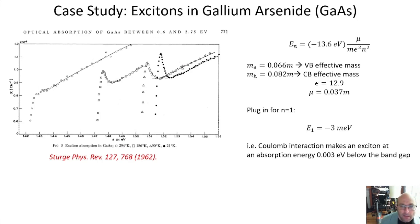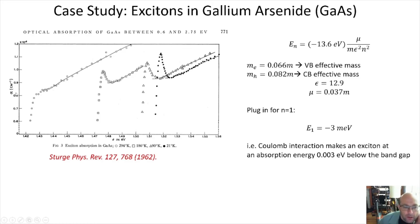Let's do a case study: gallium arsenide. GaAs has been studied for a long time. I'm showing data from Sturge in Physical Review in 1962, showing the optical absorption as a function of photon energy at a bunch of different temperatures. Looking at the filled circles measured at the lowest temperature of 21 Kelvin, you see that for energies lower than about 1.51 eV there's no optical absorption at all, and then there's a sharp onset at about 1.51 eV.